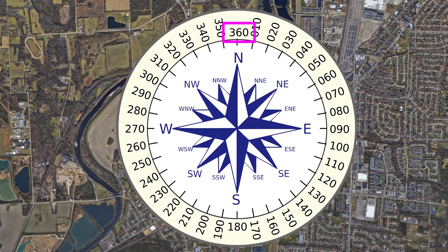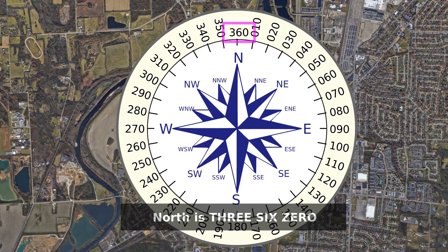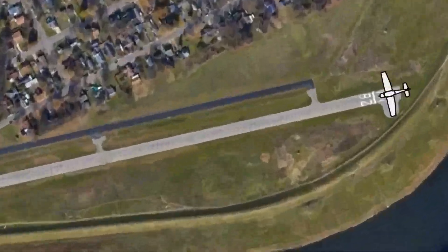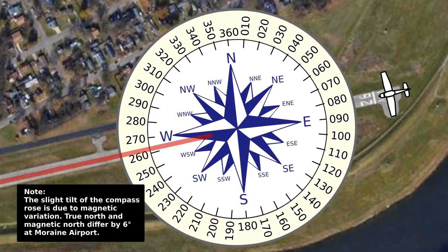By convention, in U.S. aeronautical navigation we refer to north as 360 instead of 000. As a fun fact, runway numbers are the magnetic heading of the runway rounded to the nearest 10, so an aircraft positioned to take off on runway 26 at Moraine should see a value between 255 and 264 on their compass and directional gyro.